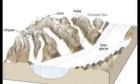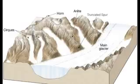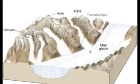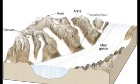Let's get into some vocab. The main glacier is the biggest part of the glacier. Then we have tributary glaciers — just like rivers, a tributary glacier is a smaller glacier that feeds into a larger glacier. Here's our big U-shaped valley: the large erosional valley that the main glacier formed as it bulldozed its way down the mountain.